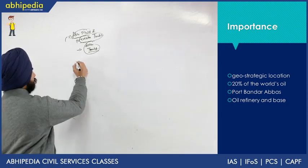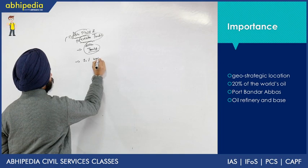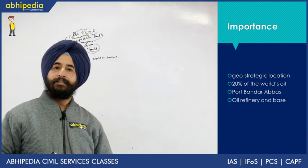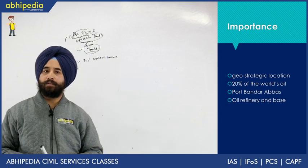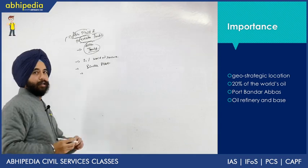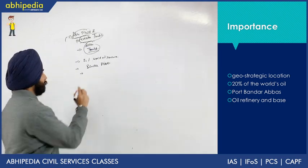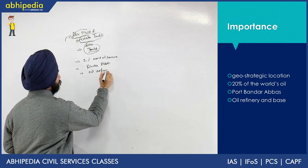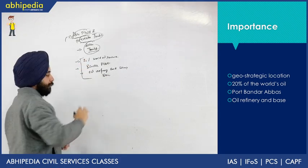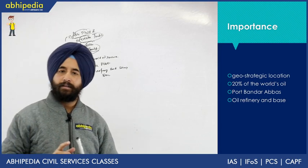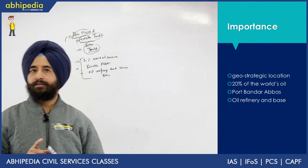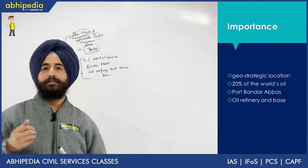20% of the world's oil resources pass through these islands. Additionally, these islands provide security to the Iranian port of Bandar Abbas. They also host an oil refinery and a military army base, further underlining their strategic and economic value.